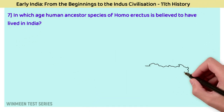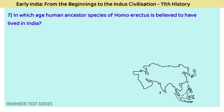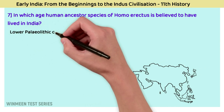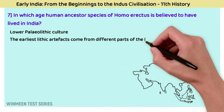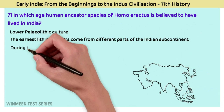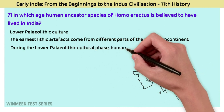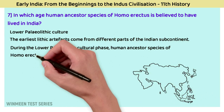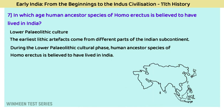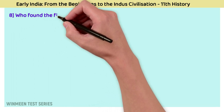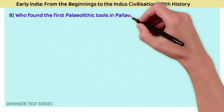Question 7: In which age is the human ancestor species Homo erectus believed to have lived in India? The answer is Lower Paleolithic culture. The earliest lithic artifacts came from different parts of the Indian subcontinent, and during the Lower Paleolithic cultural phase, Homo erectus is believed to have lived in India.